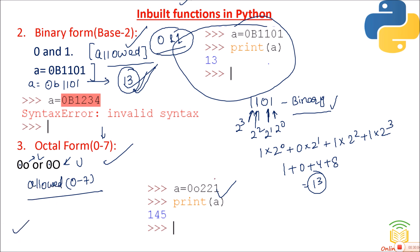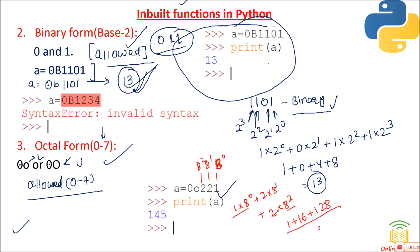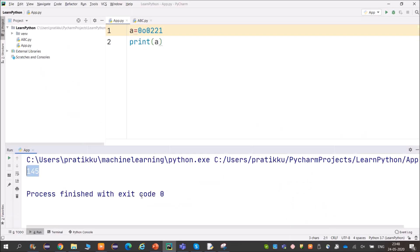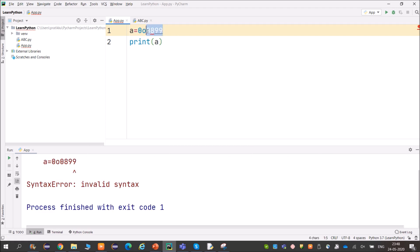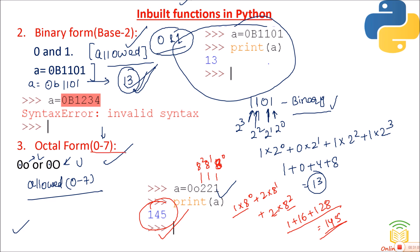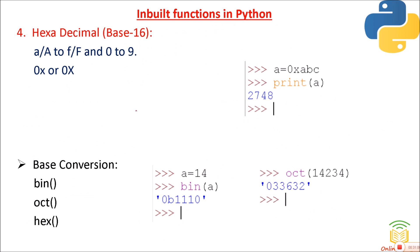To verify: for 0o221, the calculation is 1×8⁰ + 2×8¹ + 2×8² = 1 + 16 + 128 = 145. Correct. If you use digits 8 or 9 in an octal literal — like 0o899 — you'll get an error because octal only allows 0 to 7.